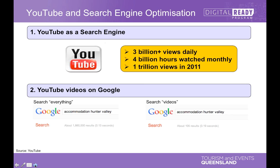It's actually fairly easy to rank really highly in the video search, because not many people have used targeted words — like 'accommodation Hunter Valley' — to rank their YouTube clip. So that's why the name of your video is very, very important.